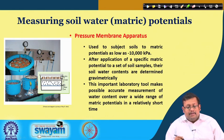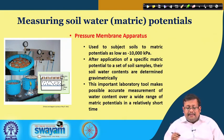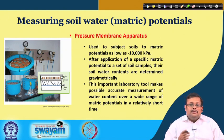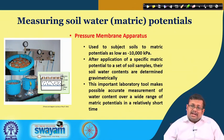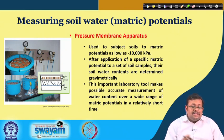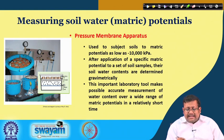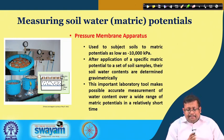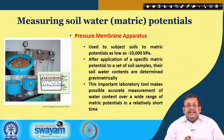Another important apparatus is the pressure membrane apparatus. It is used to measure water content at metric potential as low as minus 10,000 kilopascals. A tensiometer is useful only up to minus 85 kilopascals, whereas the pressure membrane apparatus extends to minus 10,000 kilopascals. After application of a specific metric potential to soil samples, their water content is determined gravimetrically. It makes possible accurate measurement of water content over a wide range of metric potential in a relatively short time.